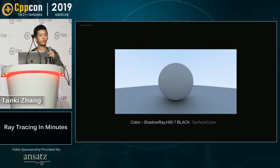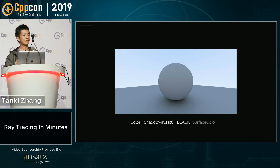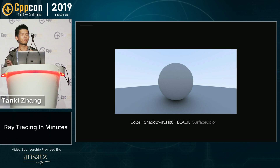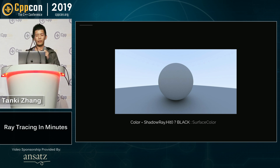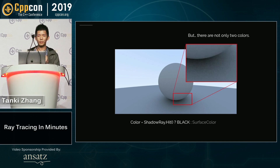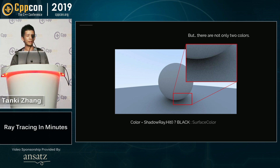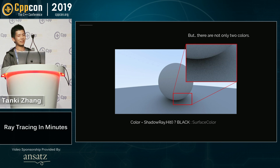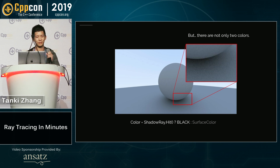One step more: if we take another ray from the surface and cast it in a random direction, and if that ray hits anything, then the ray is actually blocked from the light source. Otherwise, it's interacting with the light. Be aware that all the surface shown in gray is kind of the surface color. But if only with that equation, we should only get two colors — gray or black. But this is apparently not the truth here.